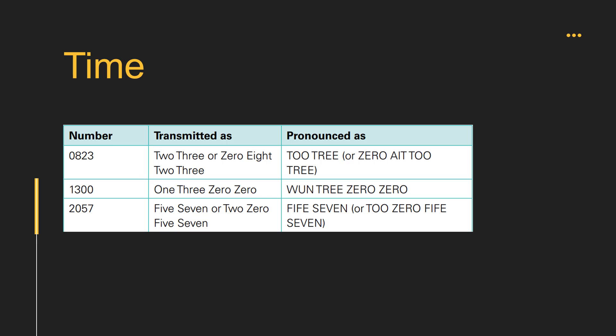Now we will learn how to transmit time. When transmitting time, only the minutes of the hour are normally required. However, the hour should be included if there is any possibility of confusion. Time checks shall be given to the nearest minute and preceded by the word 'time.' Coordinated Universal Time, or UTC, is to be used at all times unless specified. Examples: two three, or zero eight two three; one three zero zero; five seven, or two zero five seven.